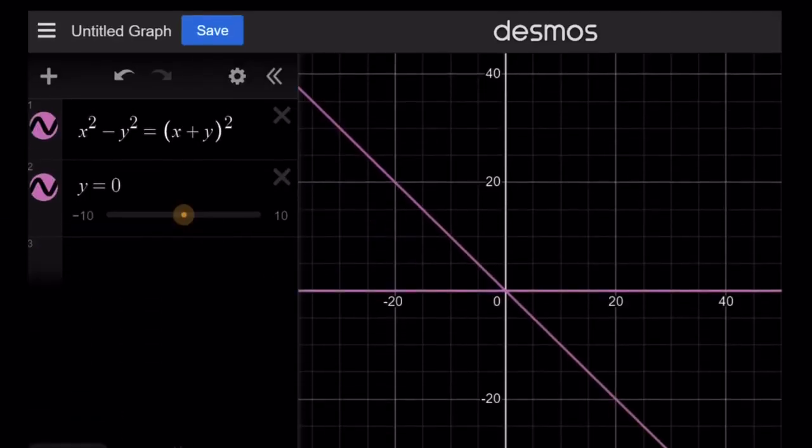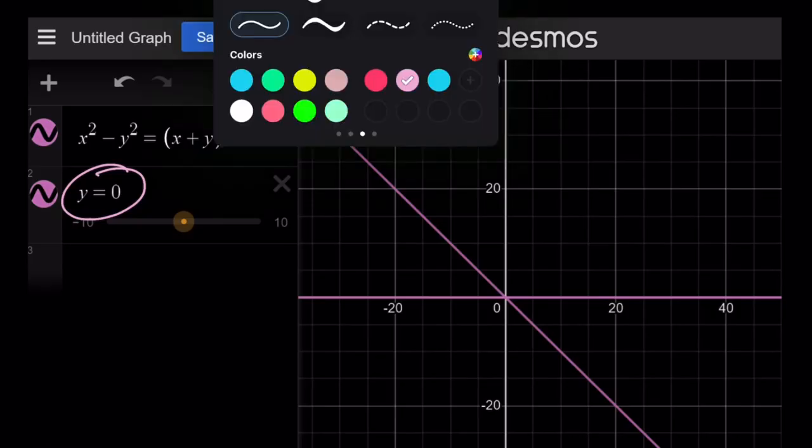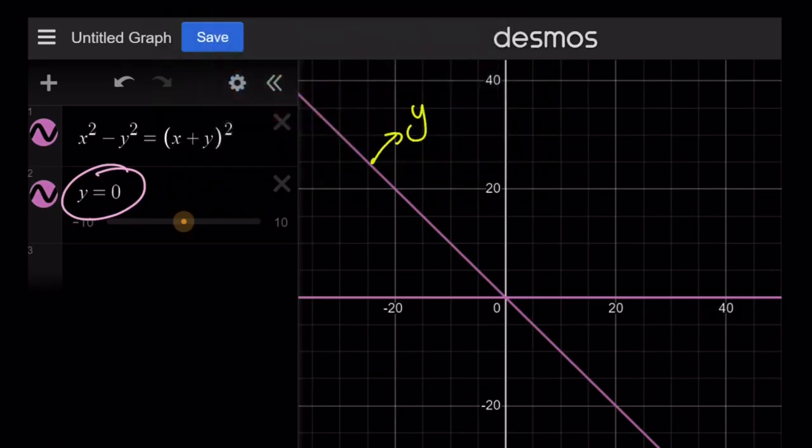And here's the graph of what is going on. Remember, we got y equals 0. By the way, why did I have to graph this separately? Because Desmos did not give me as solutions the points on the x-axis. I do not know why. It doesn't show me the x-axis. It should normally. But anyways, that's why I had to separately do it. But another solution is y equals negative x. As you can see, this line is y equals negative x, and this one is y equals 0, which is the x-axis.